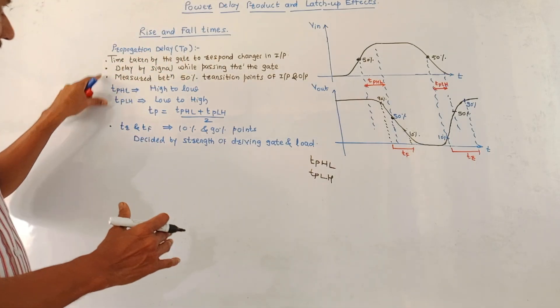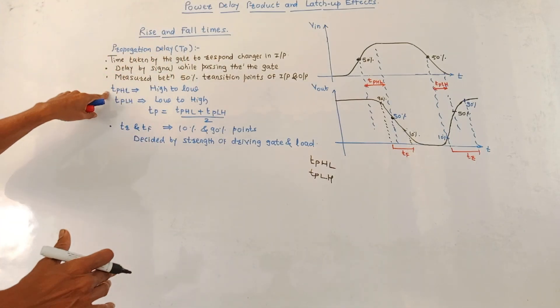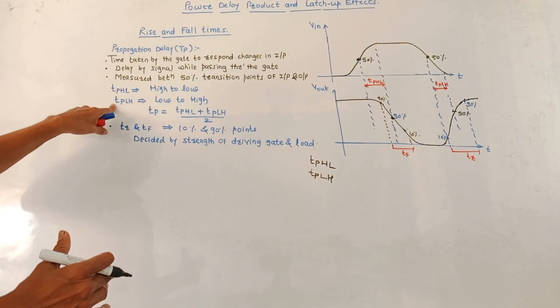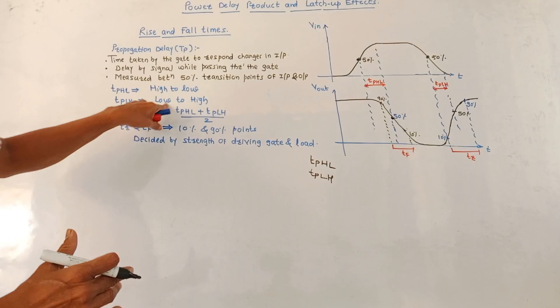These are the two points related to propagation delay. Correspondingly, TPHL for high to low transition and TPLH for low to high transition.